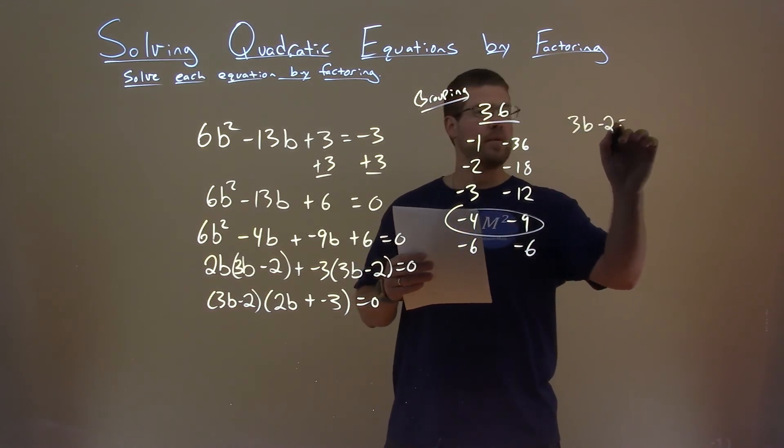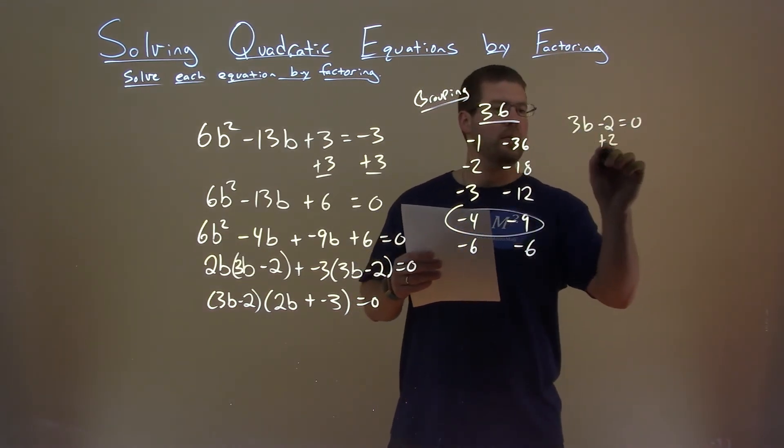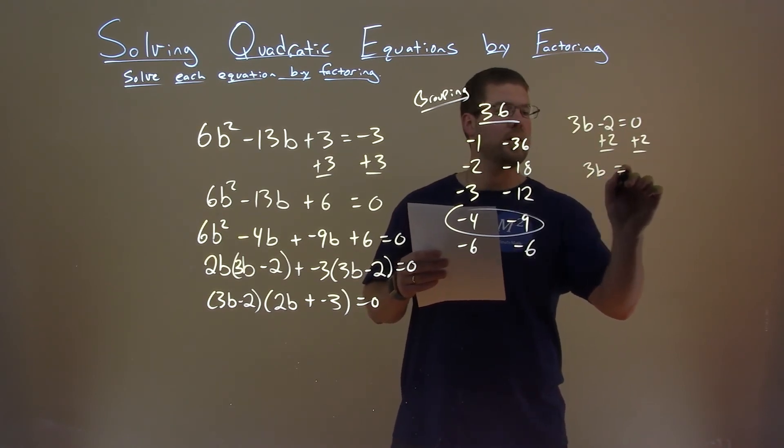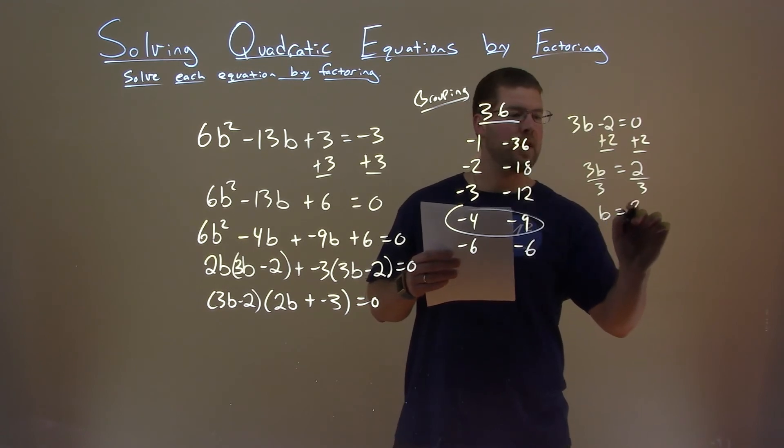3b minus 2 equals 0. Add a 2 to both sides. 3b equals positive 2 divided by 3. And b equals a positive 2 thirds.